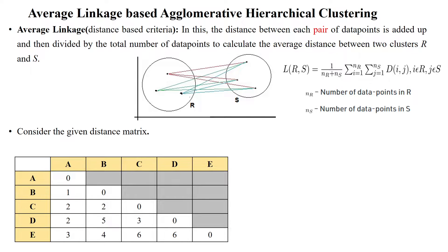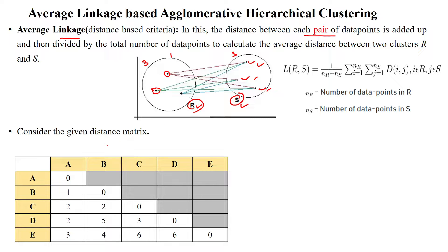Welcome to average linkage based agglomerative hierarchical clustering. The average linkage uses the average distance between pairs of data points in two different clusters. Each data point in cluster R is connected with all the data points in cluster S, and we take the average distance between all pairs across cluster R and cluster S.